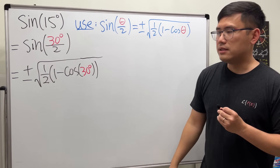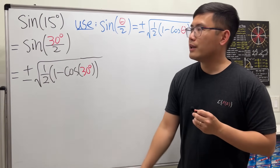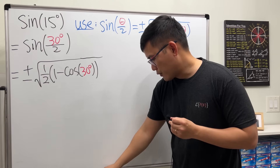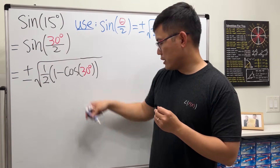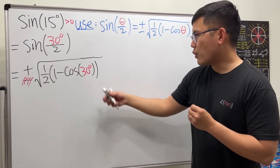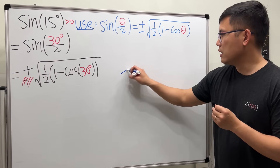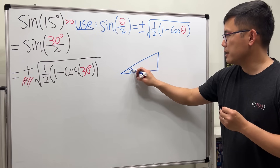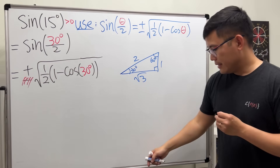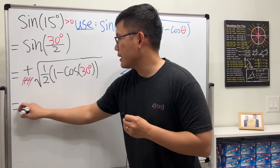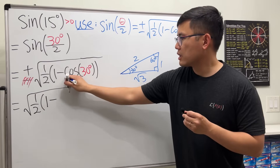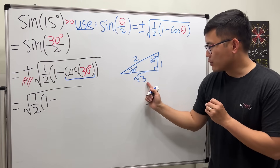Now we have to decide on the plus or minus. Since 15° is in the first quadrant, sine of 15° is positive, so we keep the positive sign. For cos 30°, we use the 30-60-90 special triangle — sides 1, √3, 2 — giving cos 30° = √3/2. So we have positive √(½ · (1 − √3/2)).